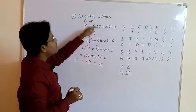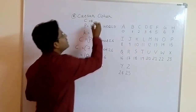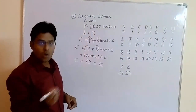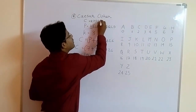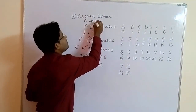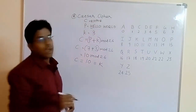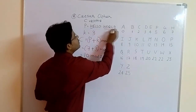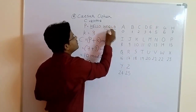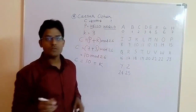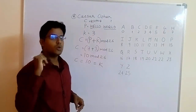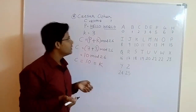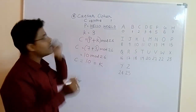Similarly, following the same procedure: for E you get H, for L you get O, and for the next letters you get O and R. I give you an assignment: find the cipher text for the word 'world' and comment below the video. This will make you clear with the Caesar cipher method.